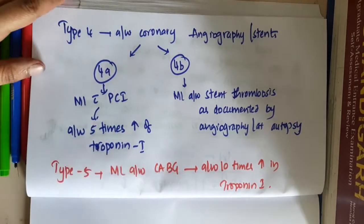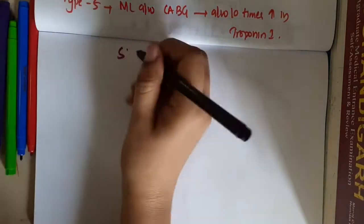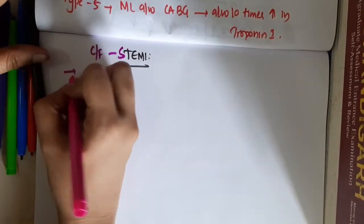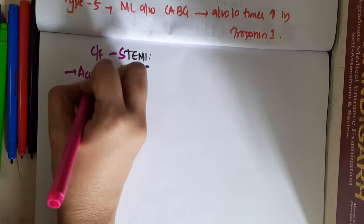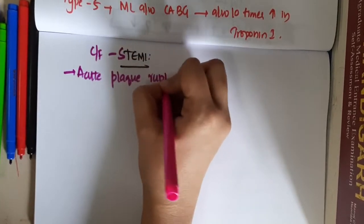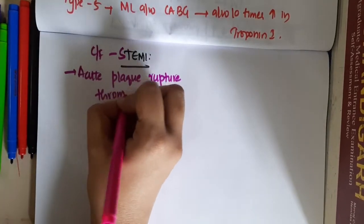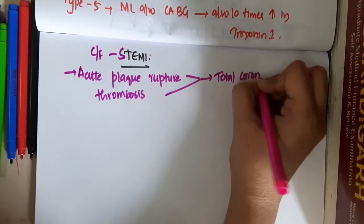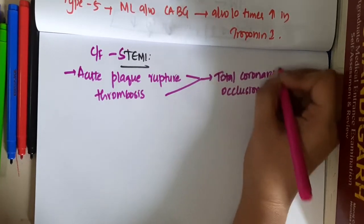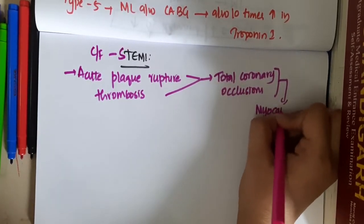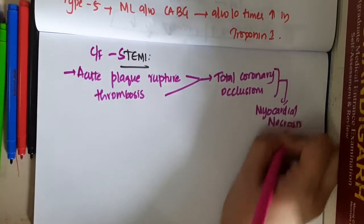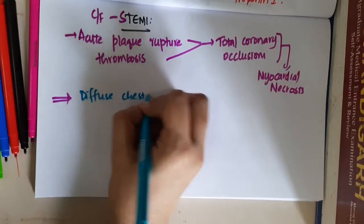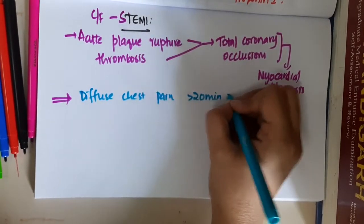Now what do you see in ST segment elevated MI? There is acute plaque rupture, thrombosis, or anything that decreases blood supply to the coronary vessels, causing total coronary occlusion — that is 100% — resulting in myocardial necrosis. The main clinical feature is diffuse chest pain lasting more than 20 minutes with one of the following criteria.